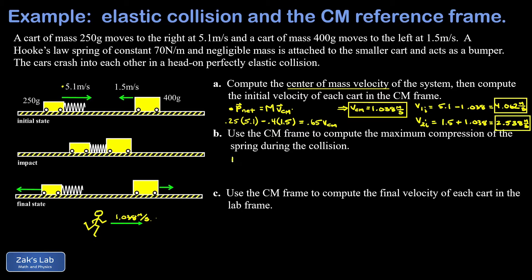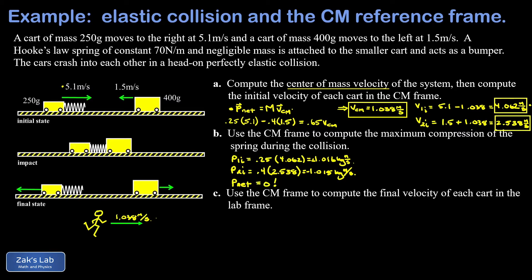Within the center of mass frame, the momentum of the 250-gram cart is 0.25 kg × 4.062 m/s = 1.016 kg·m/s to the right. The momentum of the 400-gram cart is 0.4 kg × 2.538 m/s = 1.015 kg·m/s to the left. These are practically equal in magnitude and opposite in direction, confirming the net momentum is zero — with the small discrepancy due to rounding.